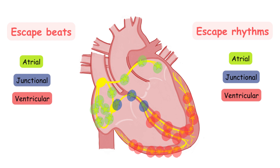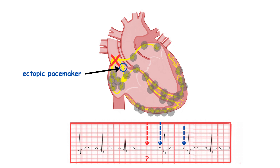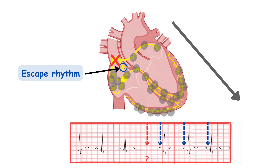Now, what is the difference between an escape rhythm and an escape beat? When a previously dominant pacemaker stops working completely, another potential ectopic pacemaker will escape to produce impulses and will become the dominant pacemaker, thereby producing an escape rhythm. The rate at which the ectopic pacemaker paces the heart decreases down the conducting system.